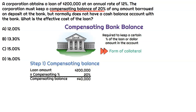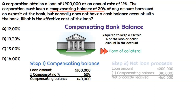In step one, let's calculate that compensating bank balance. The loan amount is $200,000 and they're saying you have to keep 20% of that in the bank account. That results in a compensating balance of $40,000, meaning the company always has to have $40,000 in that account.